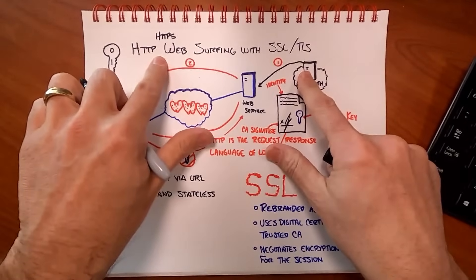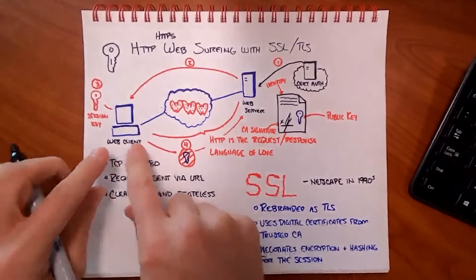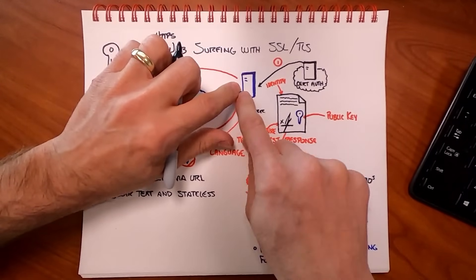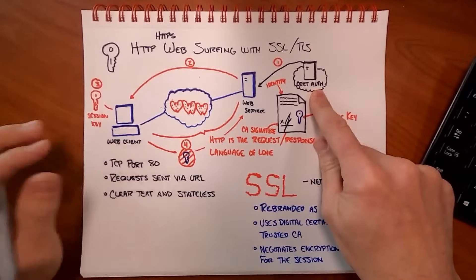The first thing that has to happen for that to even work at all is sometime in the past — before you get there — the web server, whoever runs that website, goes to a trusted certificate authority. VeriSign is the example I use all the time because they're one of the original trusted ones. The people who create web browsers — Microsoft Edge, Google Chrome — look at VeriSign and say: yes, I trust certificates that are issued by that CA.